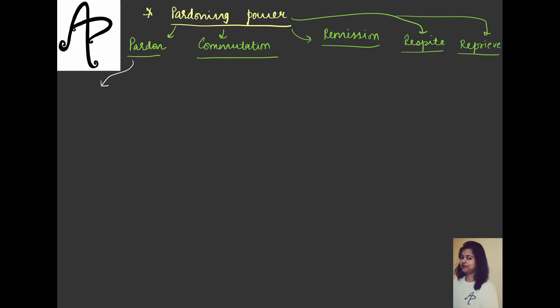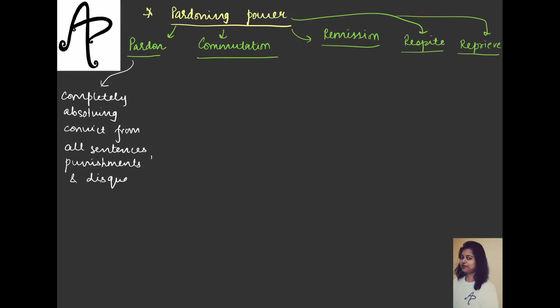When we talk about the term pardon, it means 'shama karna' — to completely forgive in that sense. So this is about completely absolving the convict — the person on whom charges have been laid — from all sentences, meaning any kind of punishment. If any kind of disqualification would have happened, that person is completely freed and absolved, so that the person is no more charged of anything.